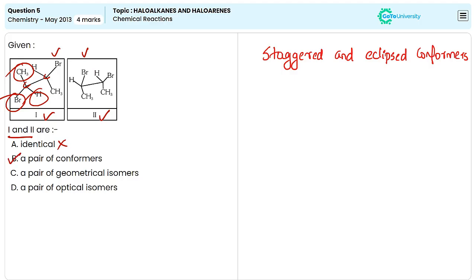And option C is also wrong because it says that these compounds are geometrical isomers. Geometrical isomers are molecules with the same molecular formula and connectivity but different spatial arrangement around a double bond. Here we couldn't see any double bond in these molecules, means they are not geometrical isomers.